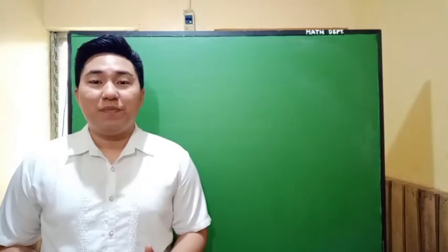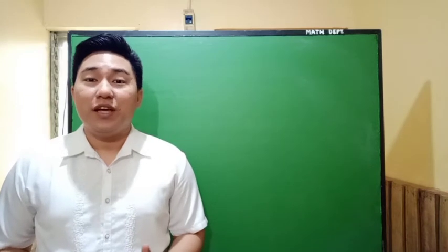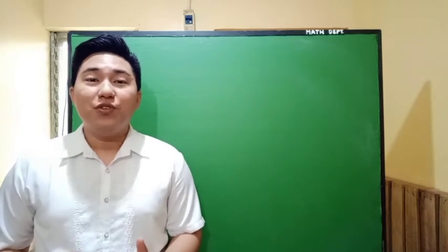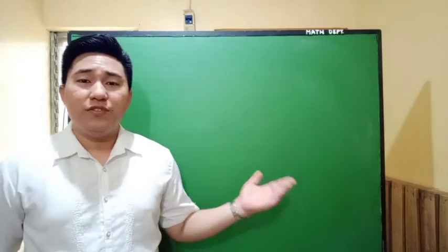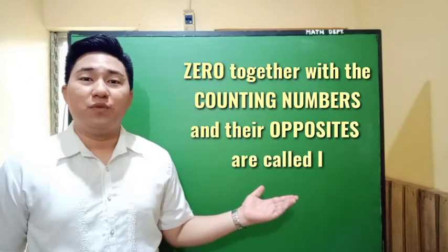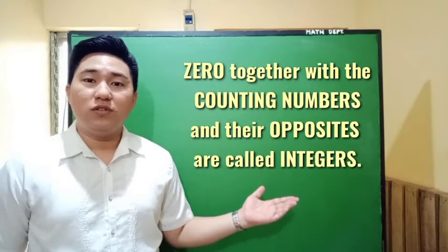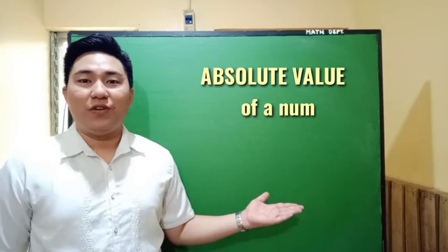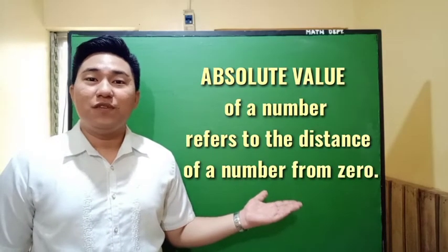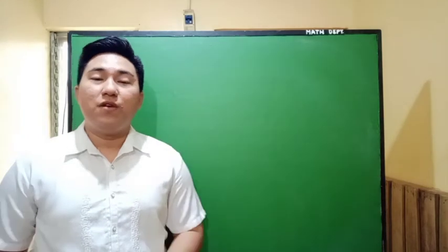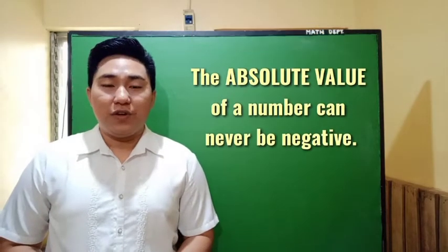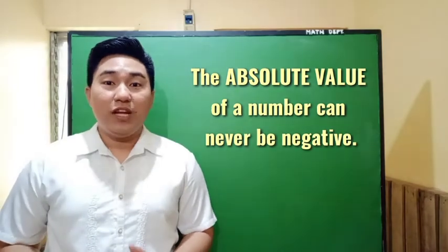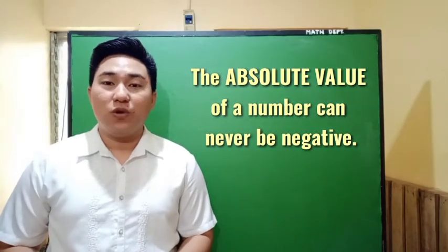Before we proceed to our main lesson, let's recall first the definition of an integer and the concept of absolute value of a number. Zero, together with the counting numbers and their opposites, are called integers. The absolute value of a number refers to the distance of a number from zero. Therefore, the absolute value of a number can never be negative — it is either equal to a positive number or zero.